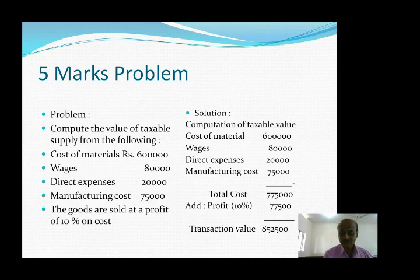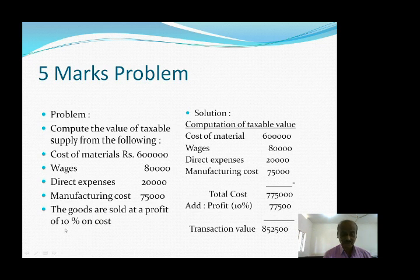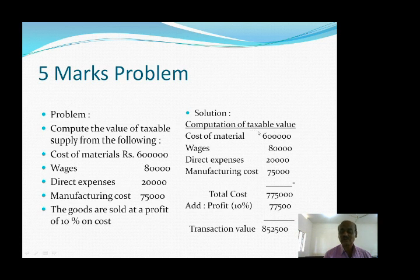The next problem is: compute the value of taxable supply. Cost of material rupees 6 lakh, wages rupees 80,000, direct expenses rupees 20,000, manufacturing cost rupees 75,000. The goods are sold at a profit of 10% on cost. So we set up the computation of taxable value using cost of material 6 lakh, wages 80,000, direct expenses 20,000, manufacturing cost 75,000, total cost, and 10% profit.